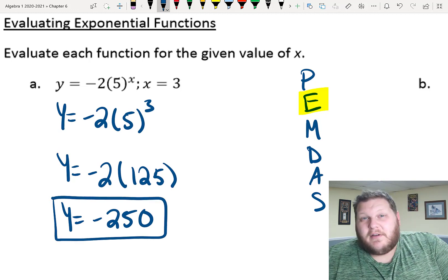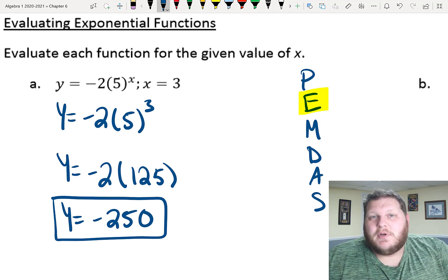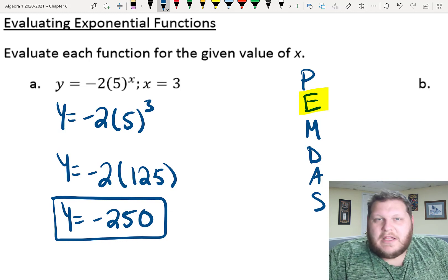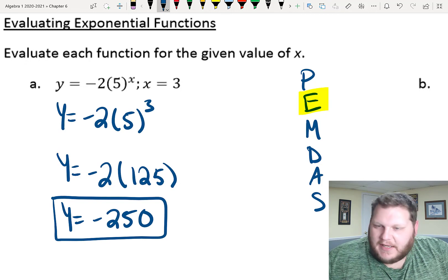Now, whether you do five to the third power in your brain, in your head, or whether you use a calculator, it does not matter to me. You guys will always have calculators available to you. But, either way you do it, you have to make sure you do five to the third power first, and then multiply by negative two to get negative 250.